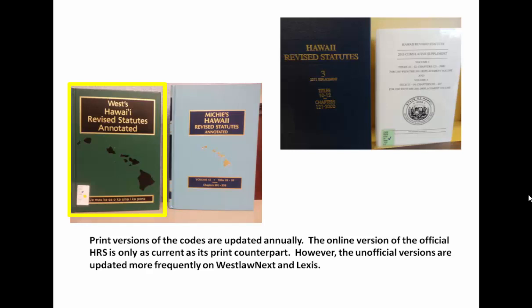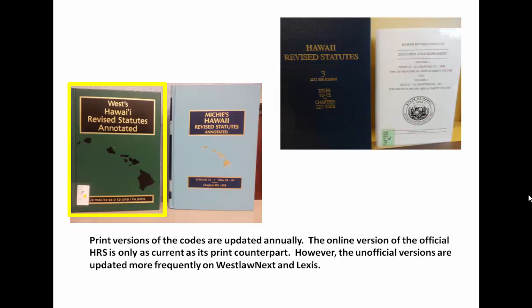On the upper right corner of your screen, you'll see a representation of the official version of the Hawaii Revised Statutes. The official version, unlike its federal counterpart, is kept up to date annually through the use of a separately bound volume called a supplement, pictured in white here. In addition, the Hawaii Revised Statutes provides research aids and is annotated, also a big difference from the federal official United States Code.